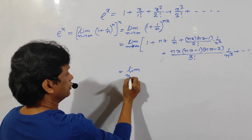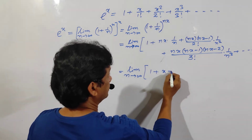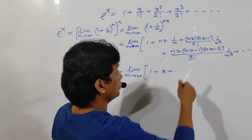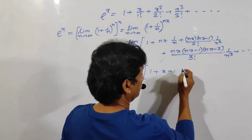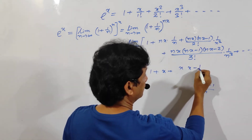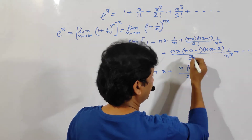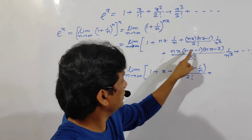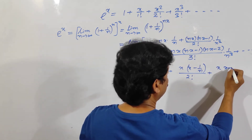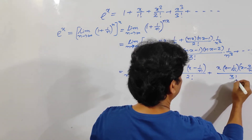So now, the interesting thing is that you should rearrange this one, with n tending to infinity. n and n cancel out, it means x. Plus — divide n squared into the numerator terms: nx divided by n is x, and nx minus 1 divided by n is x minus 1 by n, all divided by factorial 2. Then n cube — divide n into each factor: nx by n is x, nx minus 1 by n is x minus 1 by n, nx minus 2 by n is x minus 2 by n, divided by factorial 3, plus so on.